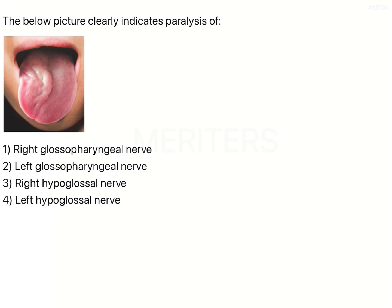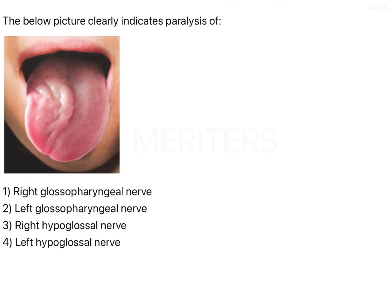The question is: the picture below clearly indicates paralysis of. If you can notice over here, the tongue has been pulled out and after pulling out of the tongue, a part of the tongue has been deviated to one side. In this image, since it is a mirror image, this is going to be your right side and this is going to be your left side.